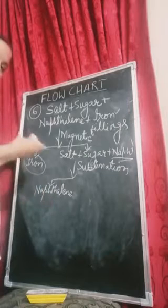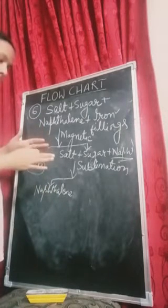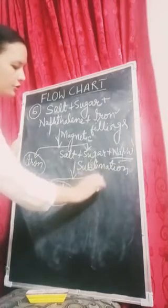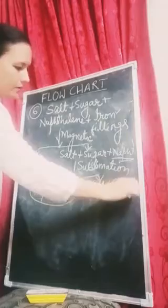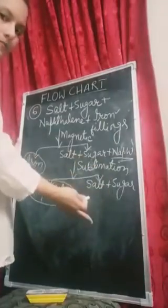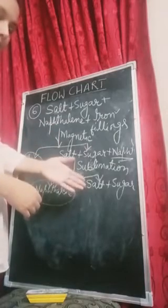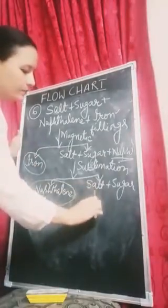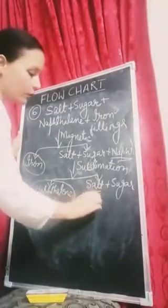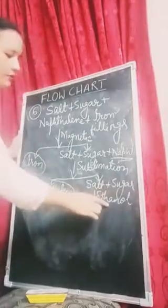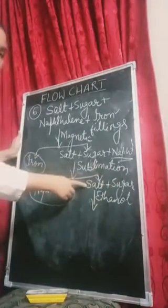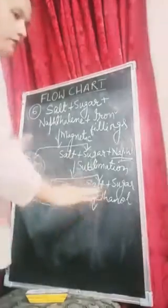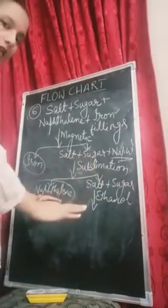Naphthalene will evaporate, change into gas, and get collected in the funnel — so this is separated. Now you have salt and sugar. Both of them dissolve in water, so we need a solvent that will dissolve one component but not the other. I will use the solvent ethanol. Ethanol can dissolve sugar but not salt.